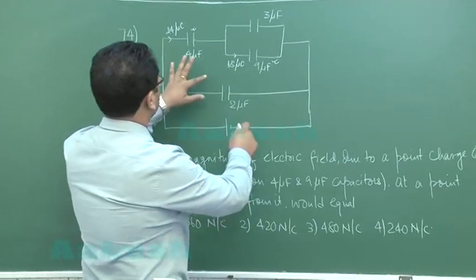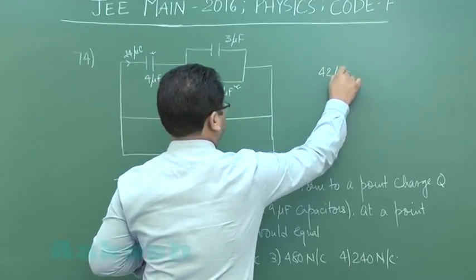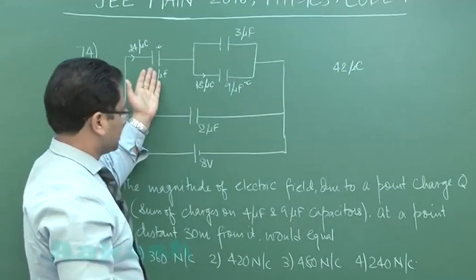Now let us try to add up the total charge and that would be 42 micro coulombs. That is the sum total of charge on this and this.